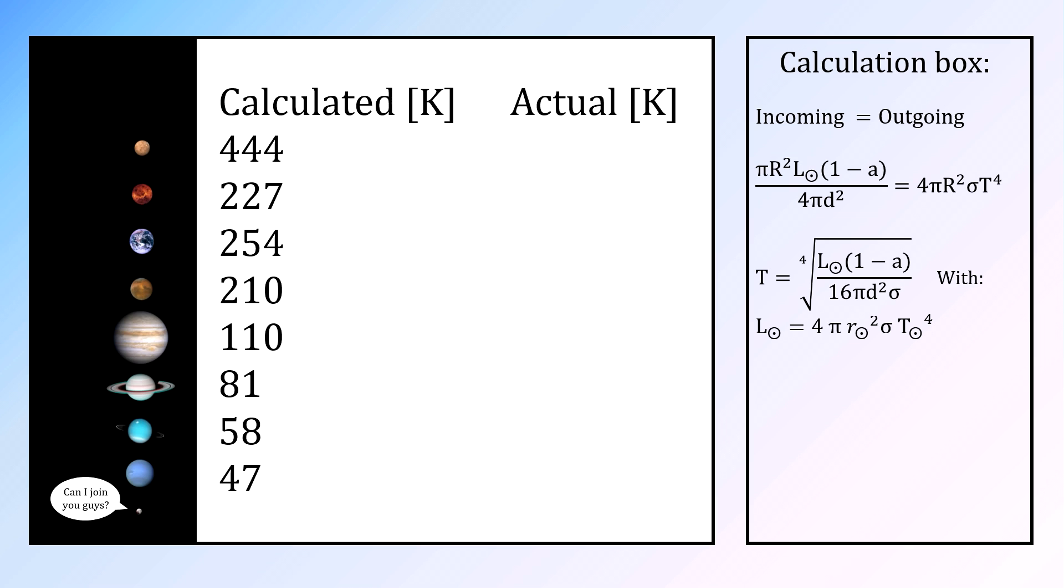These calculations will result in temperatures between bloody hot on Mercury and freezing cold on Neptune. When comparing this to the actual data, all temperatures are pretty close. Except for Venus, what is going on there?